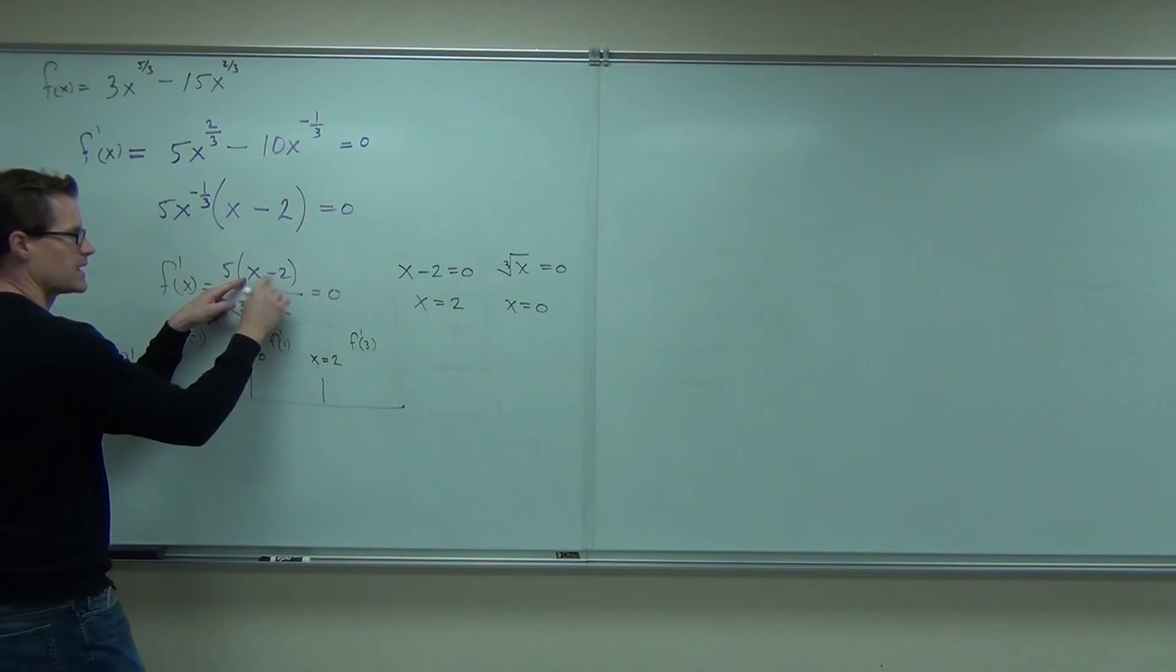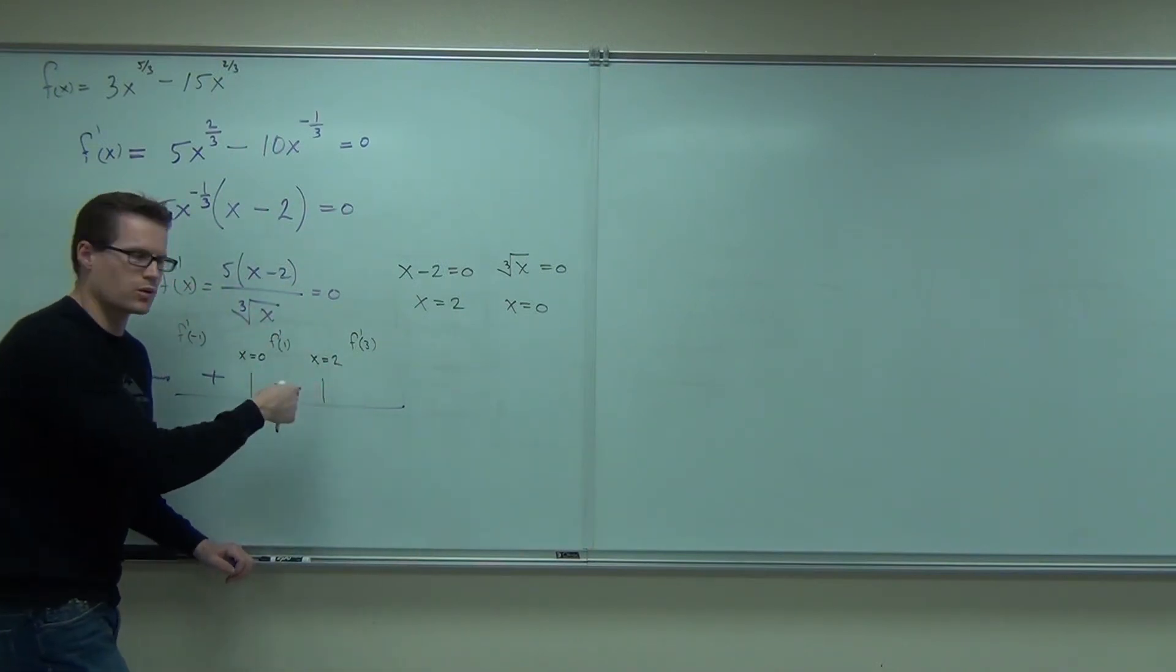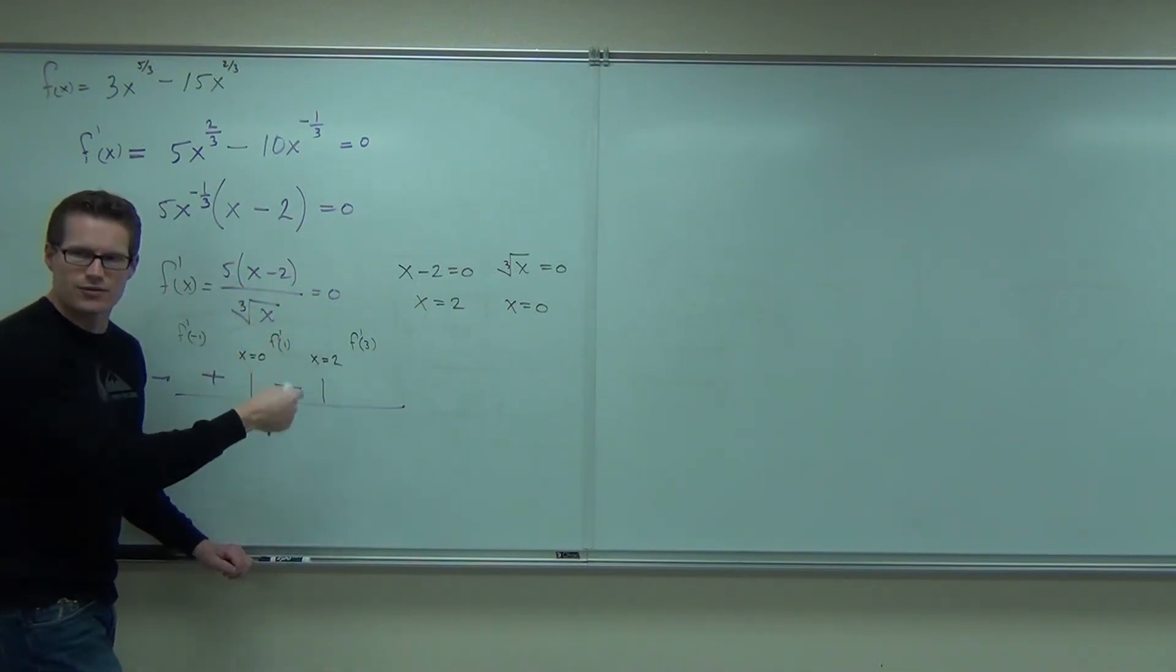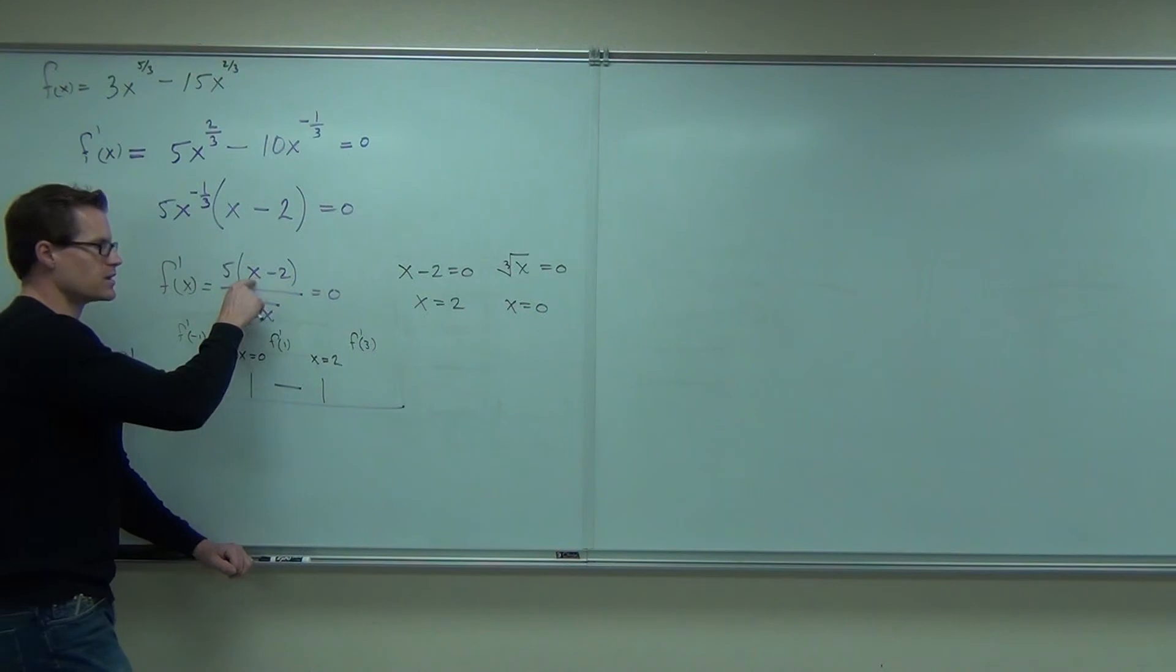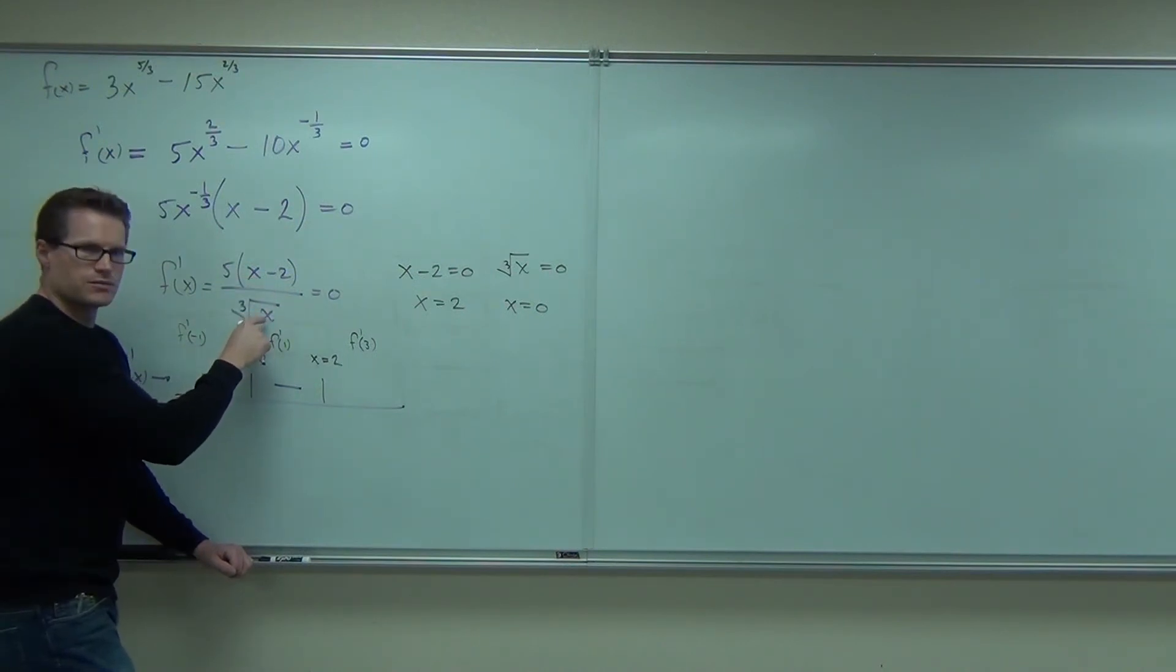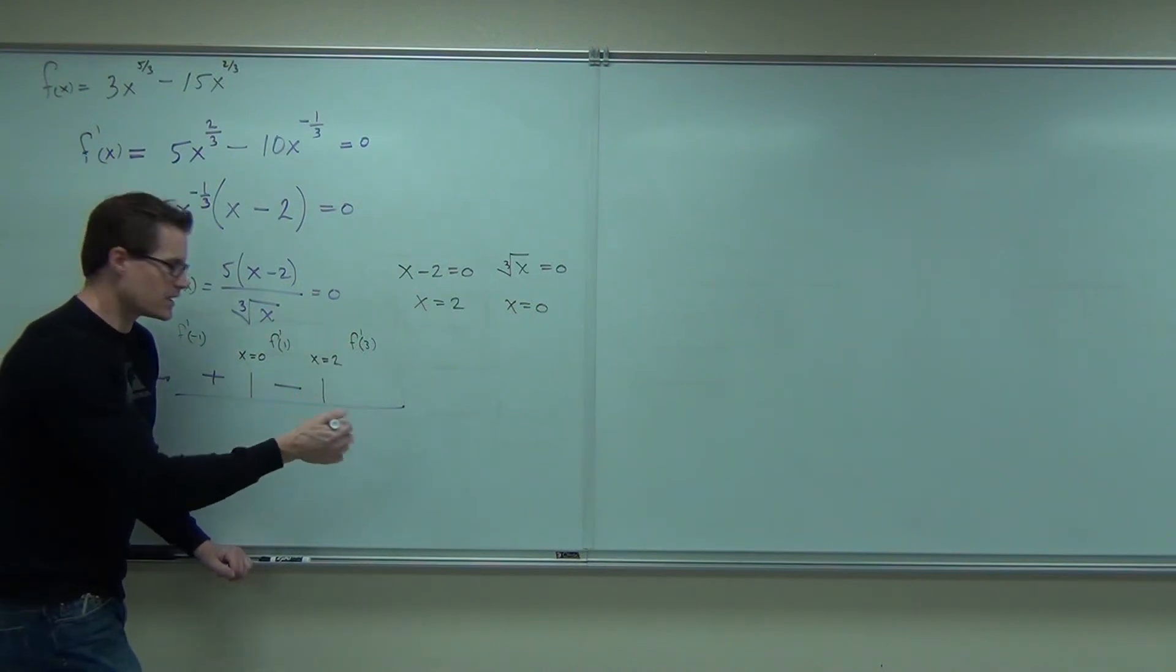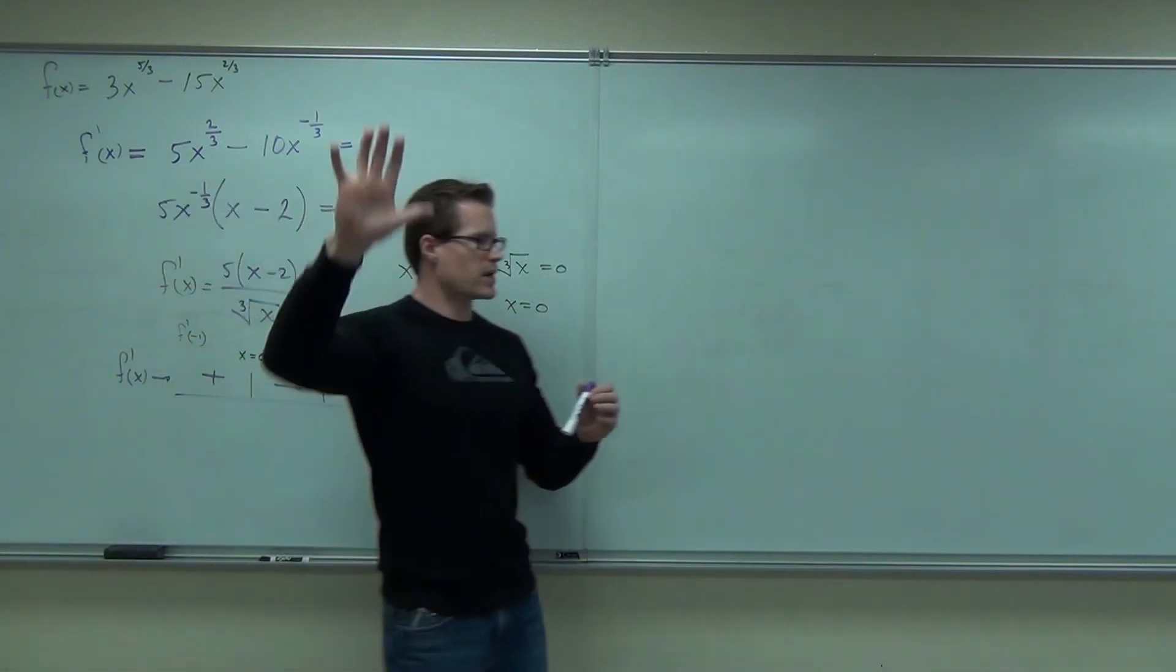We get negative over positive, that's a negative. When you plug in and try that on your own, plug in the one here, you're going to get negative one times five, that's negative five, over positive one, that's negative five, that's a negative. You still okay? Plug in three. When you plug in three, you're going to get a positive times a positive, that's a positive, over a positive. Cube root of three is going to be positive, right? I don't really care what it is. As long as it's positive or negative, that's going to be a positive. Show of hands, how many people feel okay on the plus minus plus?